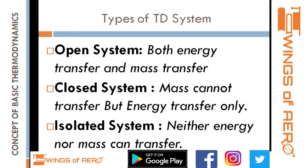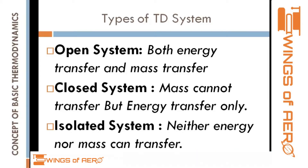For an isolated system, a great example is a thermos flask. When you have a fever, you pour hot water into a thermos flask and it keeps the water hot for several hours. Neither energy nor mass is exchanged with the surroundings, making it an example of an isolated system.